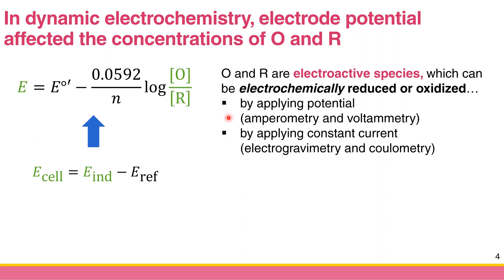There are two ways to drive the oxidation or reduction of electroactive species. One way is to control the potential directly by applying potential — this covers amperometry, voltammetry, electrogravimetry, and coulometry. The second way is to apply a constant current and let it match the appropriate potential to oxidize or reduce the species. Typically, electrogravimetry and coulometry fall into the constant-current category.